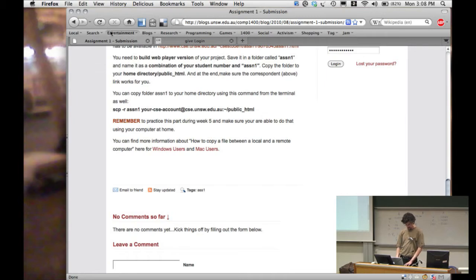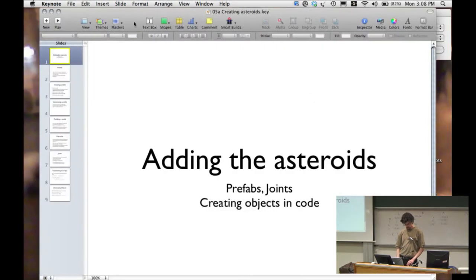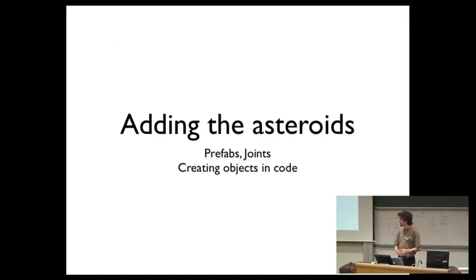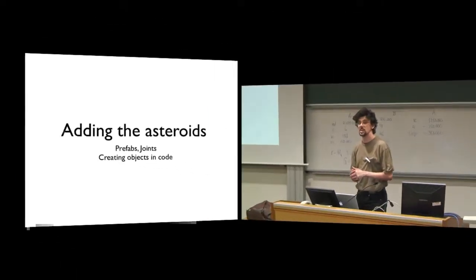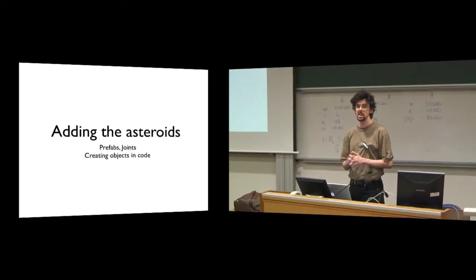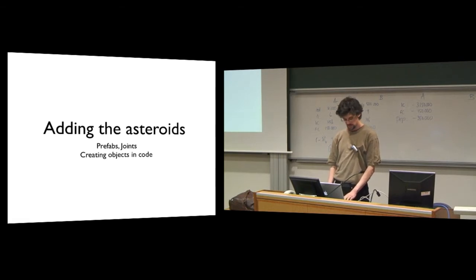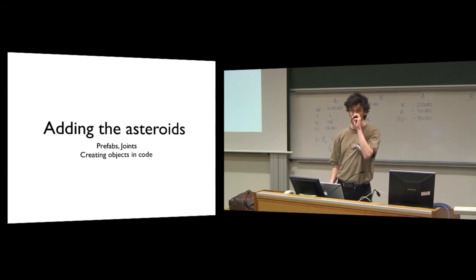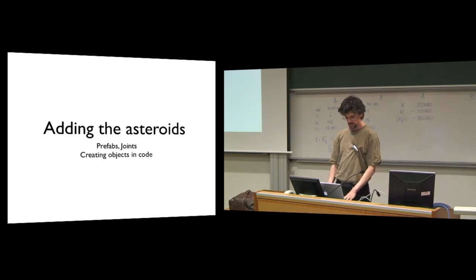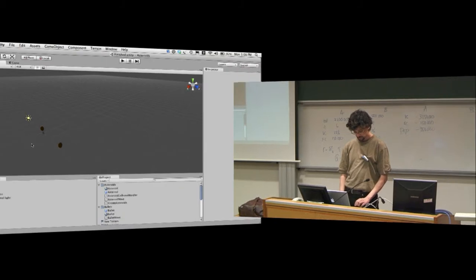So today — the last thing we started doing in the last lecture was adding asteroids to our world. We created a single asteroid which was moving around. Now we're going to show how to make lots of asteroids and get them all doing different things. I'm going to dive back into Unity.